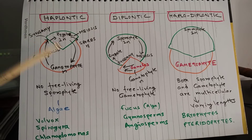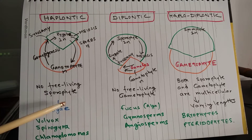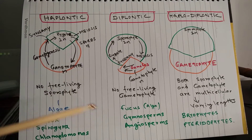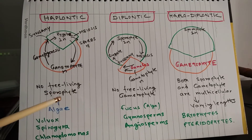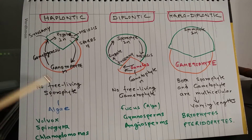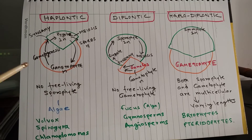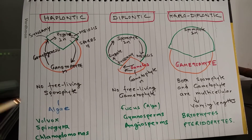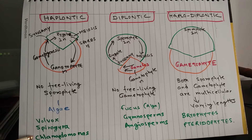In this case, the sporophyte phase is not free-living. It depends for nutrition and survival on gametophytes. This condition is seen in most of the algae. Some examples are Volvox, Spirogyra, and Chlamydomonas.